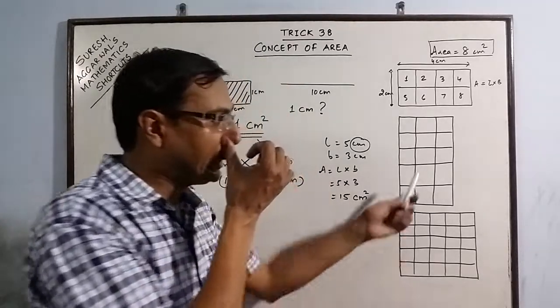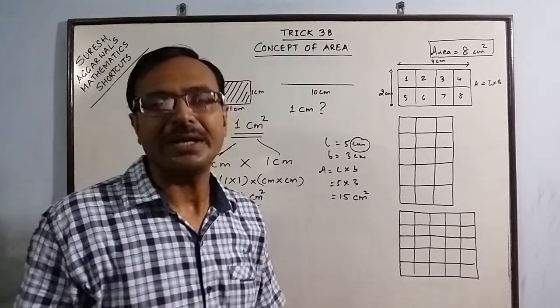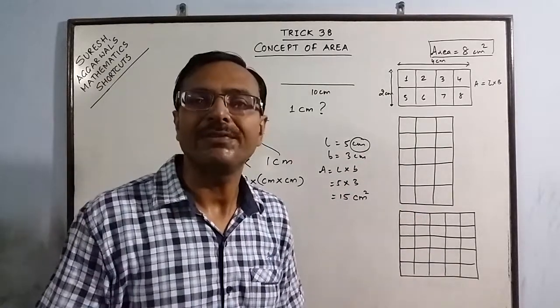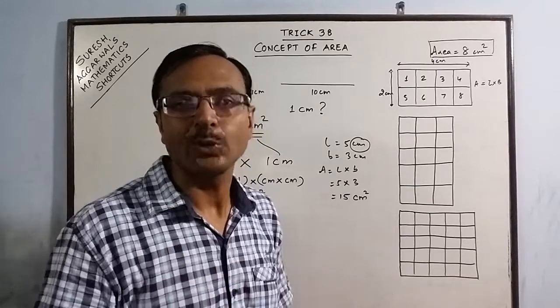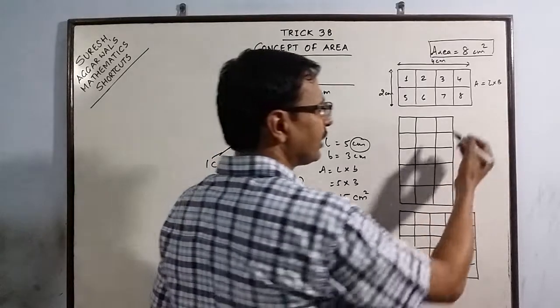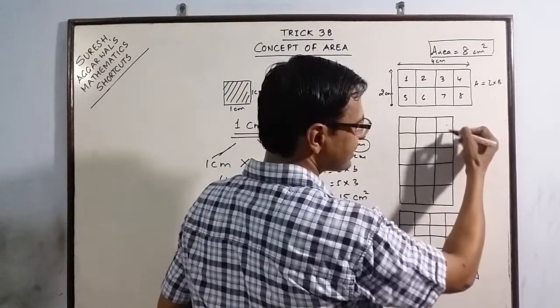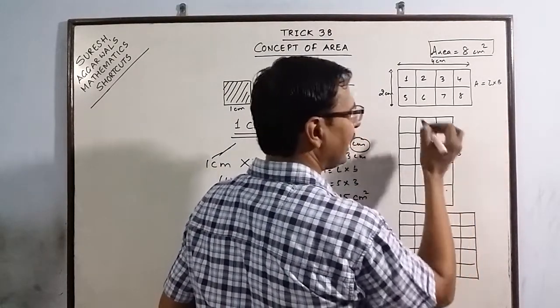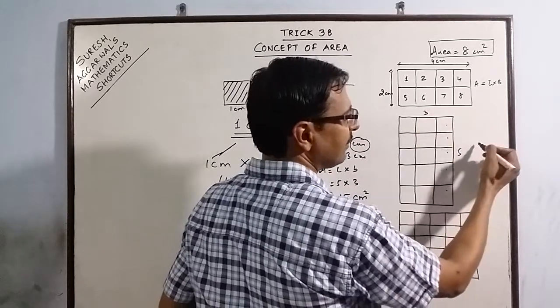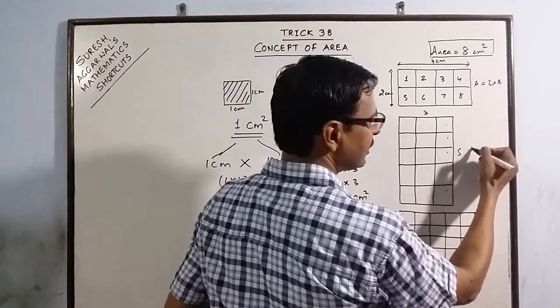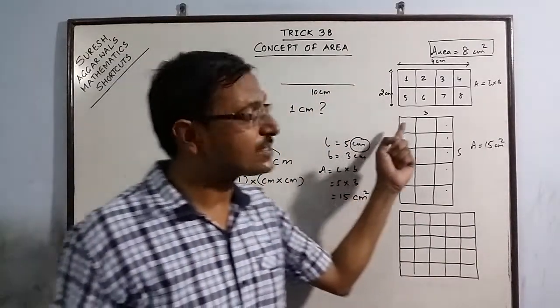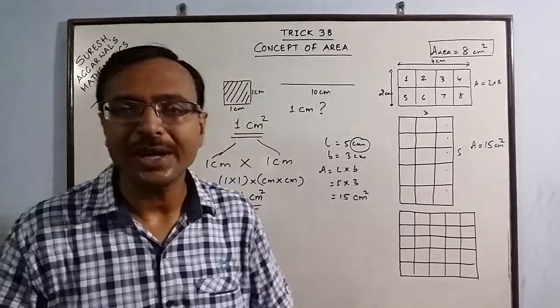Now the same concept when applied to here, any student will tell you that the area of this rectangle is 15 irrespective of the fact that he or she doesn't know the formula for finding the area or not. He will just count how many square cm are along the length, 5, and how many along the breadth, 3, and he will tell you that 5, 5, 5 is 15. So area is 15 square cm. So if he knows the concept of 1 square cm, then he can measure any area.